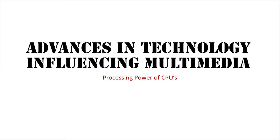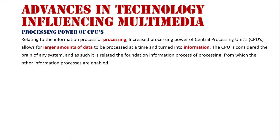Advances in technology are influencing multimedia. What we're talking about here is essentially the information process of processing, and the increased power of the central processing unit allows for larger amounts of data to be processed at a time and turned into information. So the more processing power we have, the more processing we can do. This all comes down to the CPU, which is mentioned as the brain of the system.